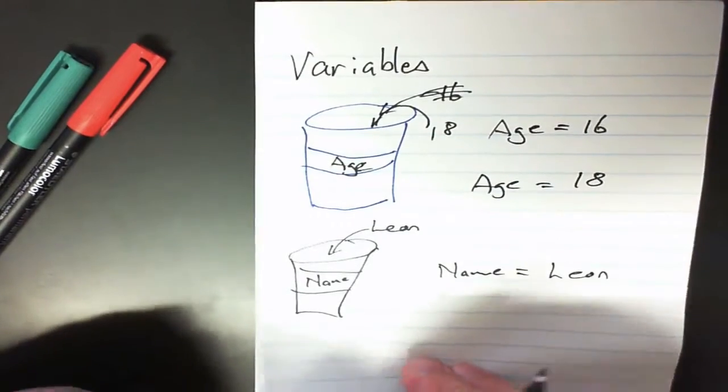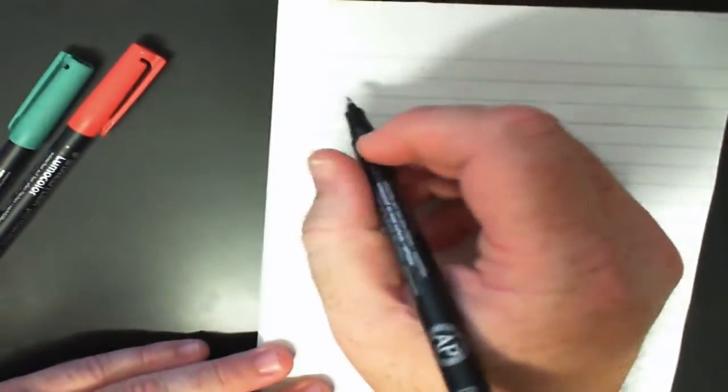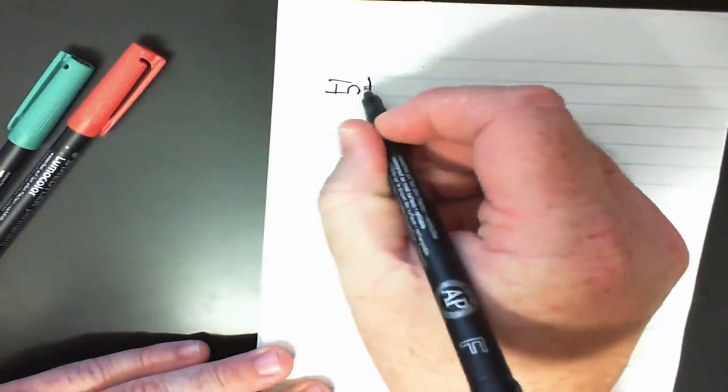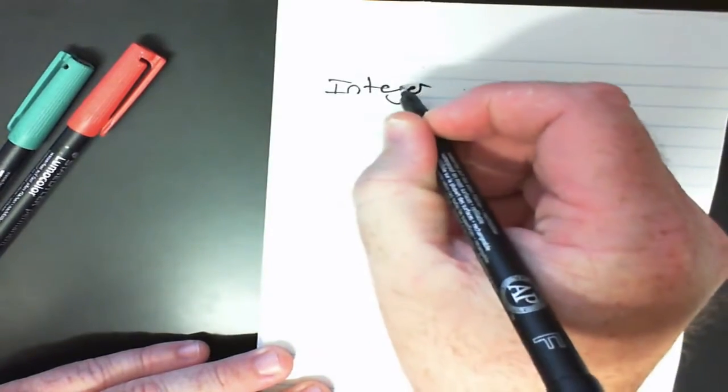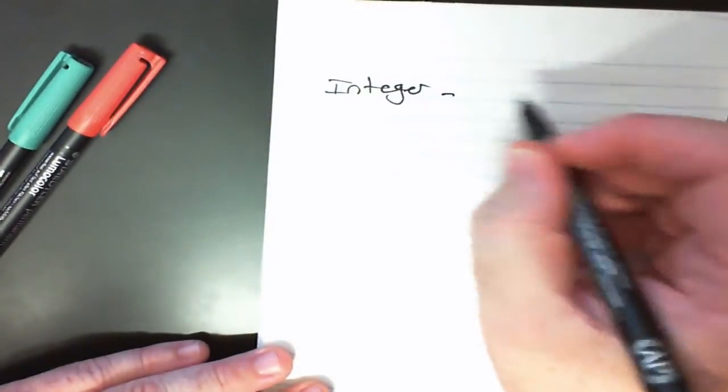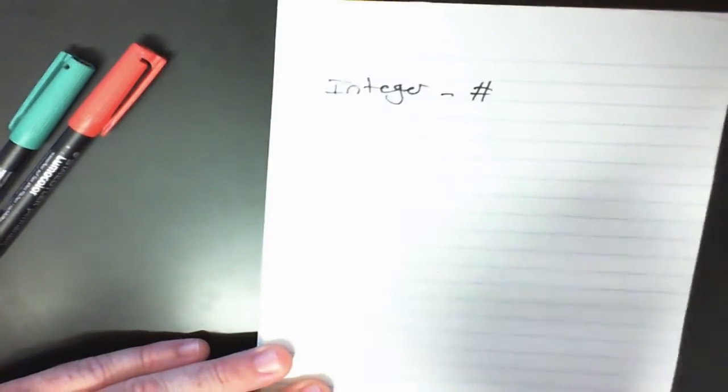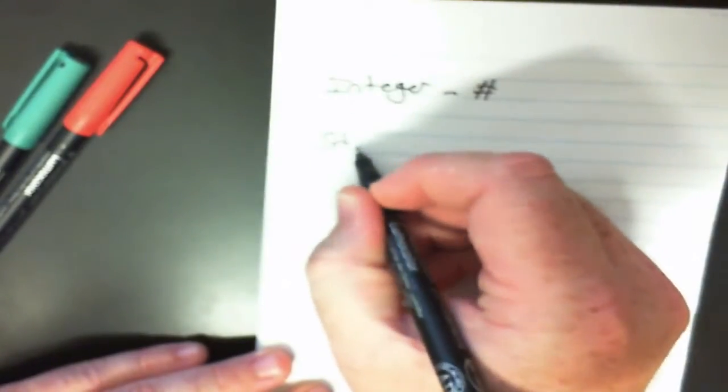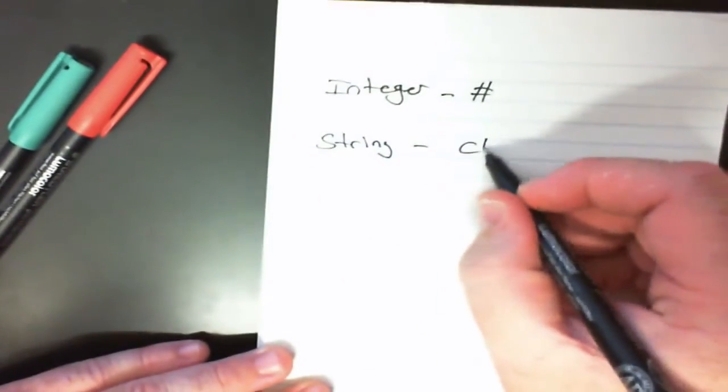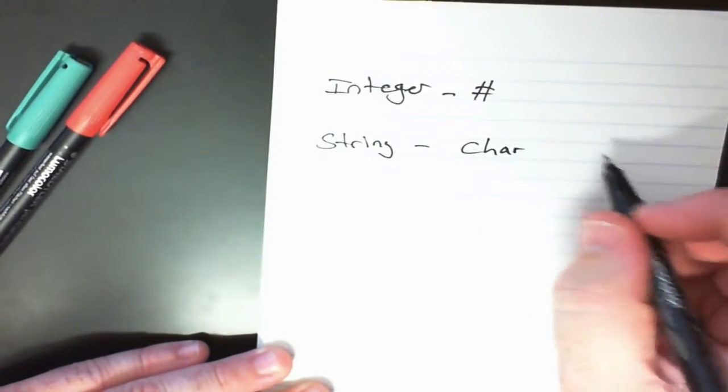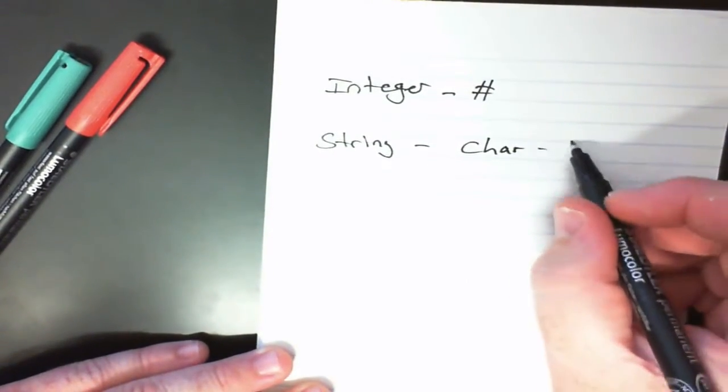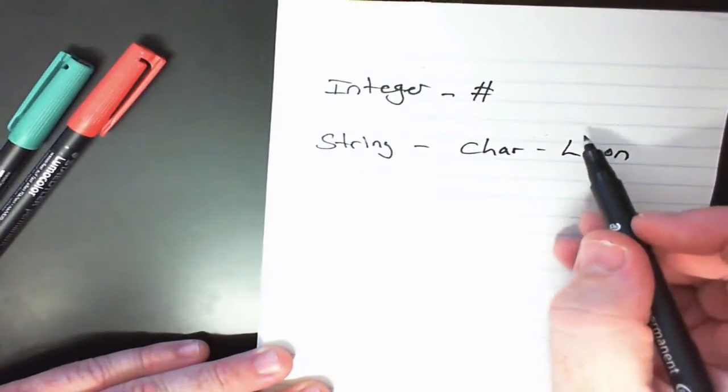Now there are different types of variables. The most common ones that we will be using is integer, and this is for Visual Basic, and this is to hold numbers. Another type we will use is a string, and a string will actually hold characters, also known as char. So a word such as Leon, this is made up of individual characters and is stored as a string.